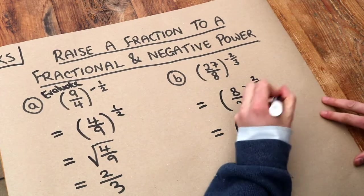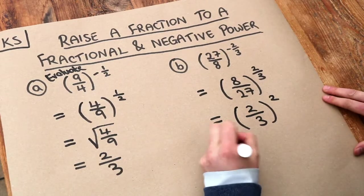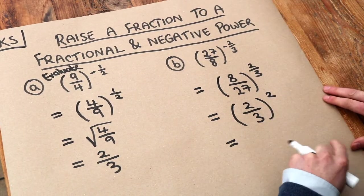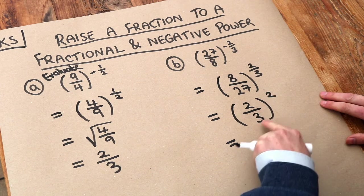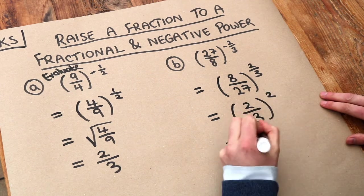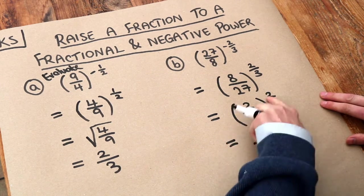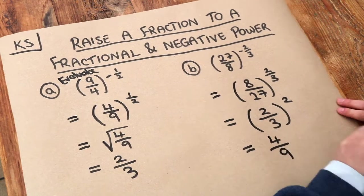And we're just left with that 2 in the numerator now. And then 2 thirds squared. Well I just need to do 2 squared and 3 squared. So 2 squared is 4 and 3 squared is equal to 9. And we are done.